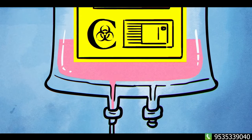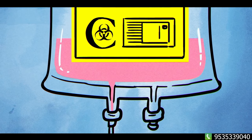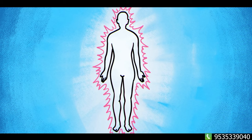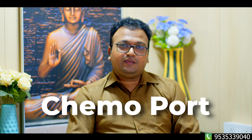We can use blood vessels in our body to administer chemotherapy. Sometimes the vein is completely blocked by chemotherapy. If a chemo medicine comes out of blood vessels, it will also damage the tissue. If the tissue is damaged, we can delay the next cycle of chemotherapy. In this case, I would suggest a chemo port.